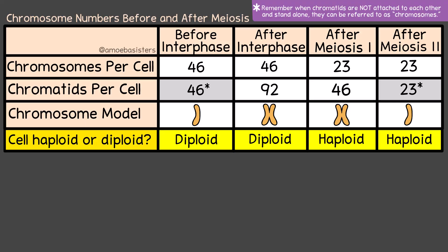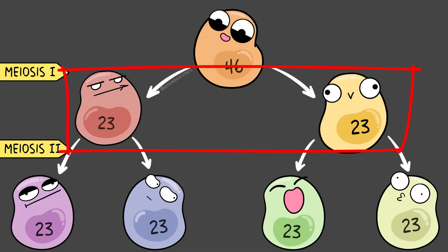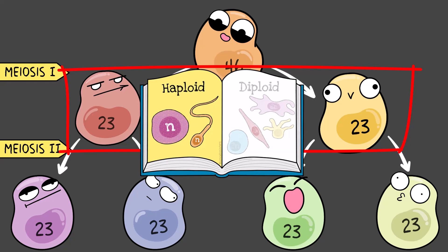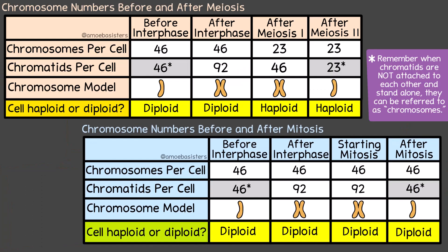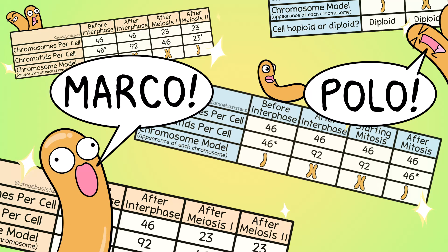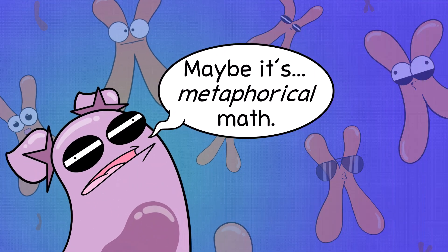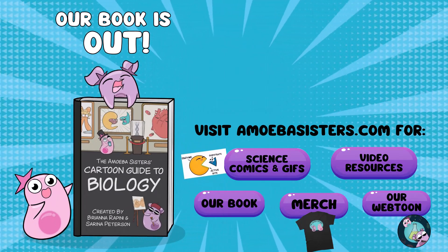We can now add a row to the table about haploid and diploid. Here is meiosis with a new row showing whether cells are haploid or diploid. After meiosis I, the daughter cells are haploid because each one has just one version of every chromosome type — meaning each daughter cell only has one set of chromosomes. The cells would also be haploid after meiosis II. We can add the haploid and diploid row to our mitosis table too, although it's not quite as exciting because it's always diploid from start to end. Beautiful tables that we hope will help with understanding how chromosome numbers change in cell division. That's it for the Amoeba Sisters — stay curious.